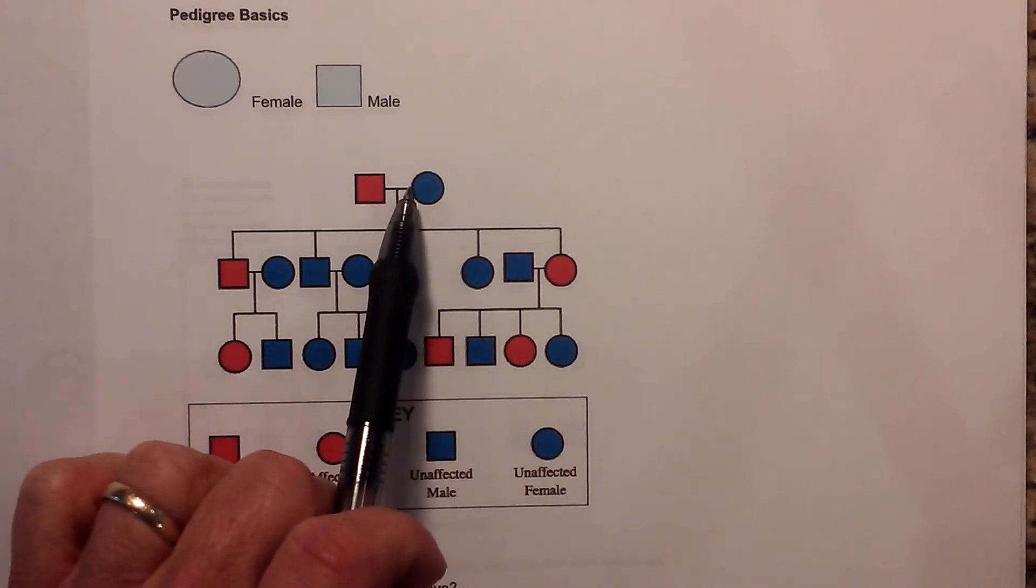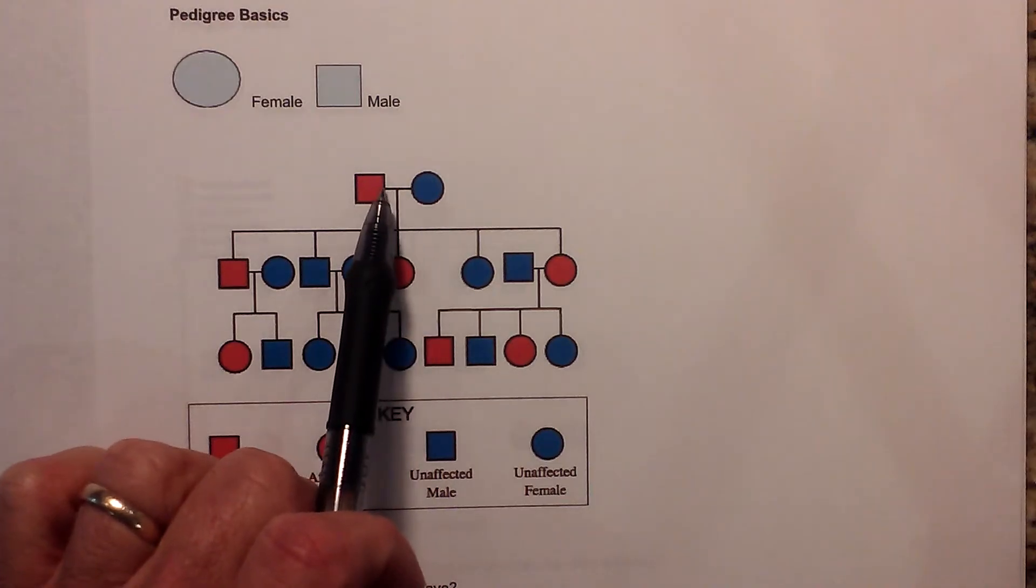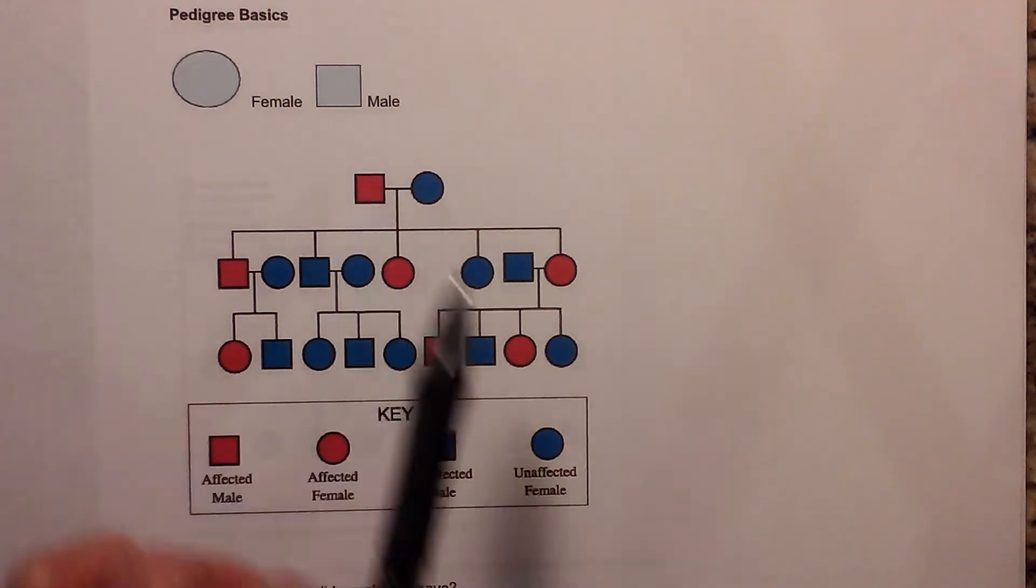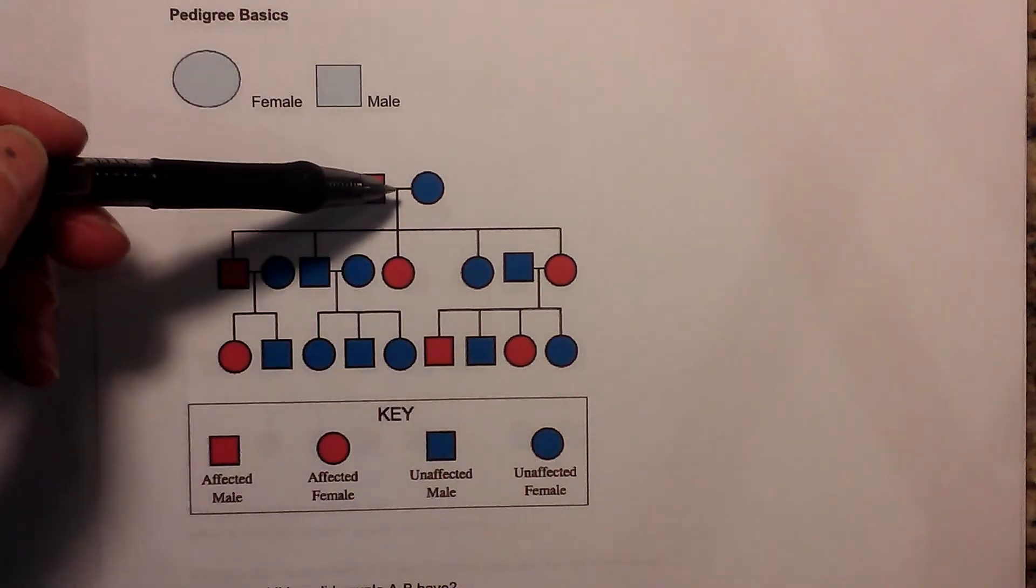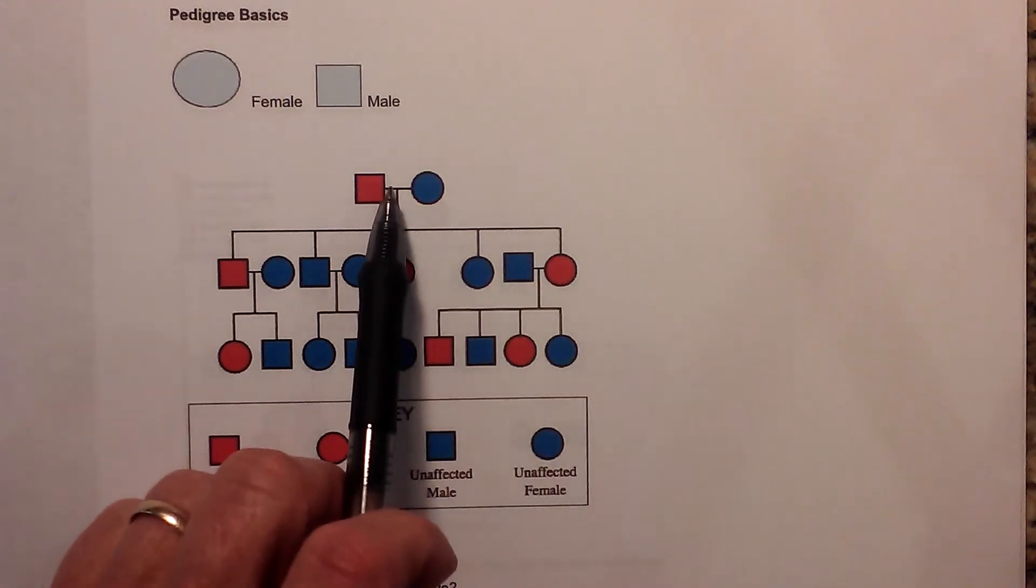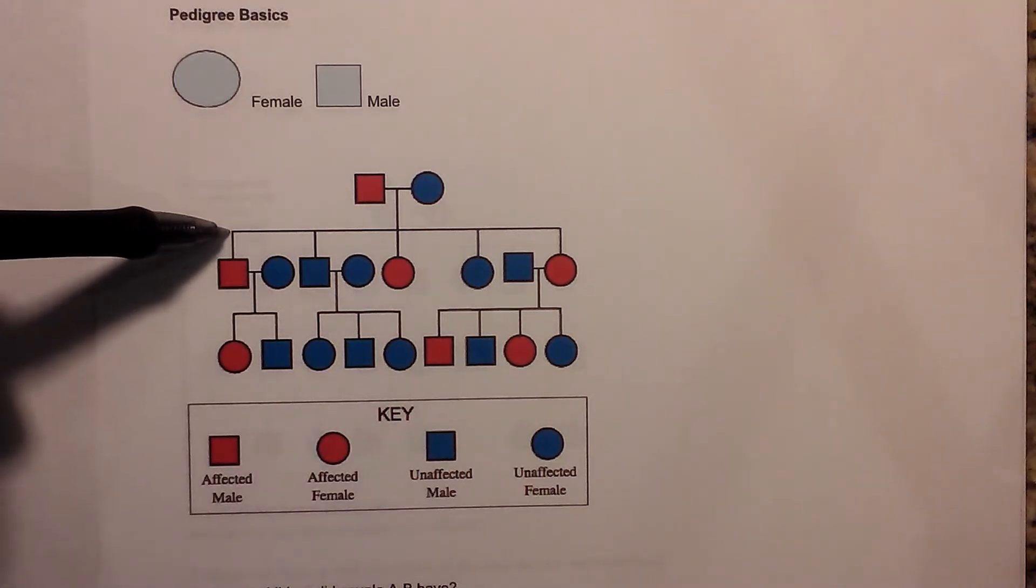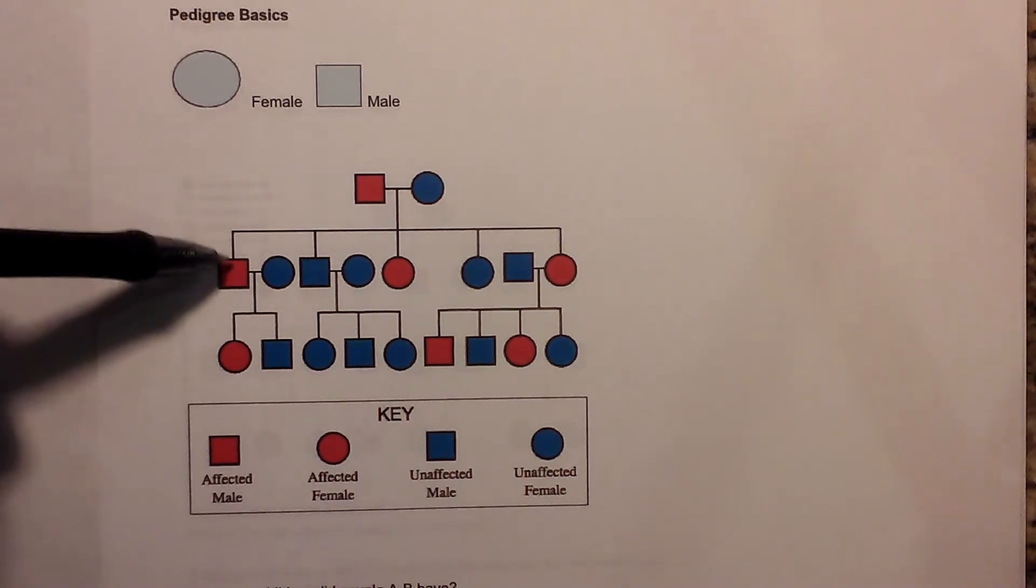Next, whenever you have a horizontal line connecting a square and a circle, you can assume that they are a couple or they are married. So this A and B, they are married. Next, you have a vertical line coming off that, and that will tell you that they have children. So you have a vertical line, then a horizontal line, and then you have lines coming off the horizontal line.